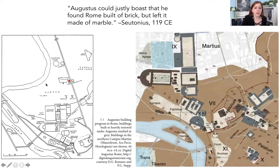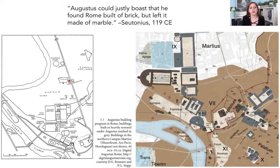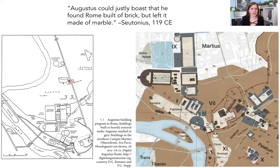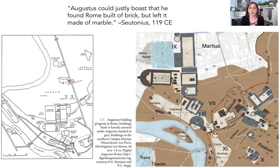Its position on the Via Flaminia is really important because it faced everyone entering or exiting the city on that road. On its other side it also faced the Campus Martius, a training ground for the Roman military — almost like one of our modern military bases or camps. In that way it faces both the military, whose support is very important, and all the people on that major road in and out of the city. So it had lots of visibility as a monument.